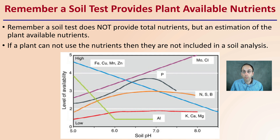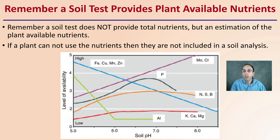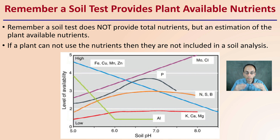Now remember, a soil test provides the plant-available nutrients — it does not provide the total nutrients. However, it is an estimation of the plant-available nutrients. If a plant cannot use the nutrient, then it's not included in the soil analysis, at least theoretically. This is why if people take the same soil sample, divide it into two subsamples, and send it off to different labs, they may get results back that are slightly different. Each lab is doing the best it can to estimate the plant-available nutrients. The numbers might differ slightly, but for the most part they're going to be very close to one another, because it's an estimate of what's available to your plants — not the total amount of phosphorus or potassium in your soil.